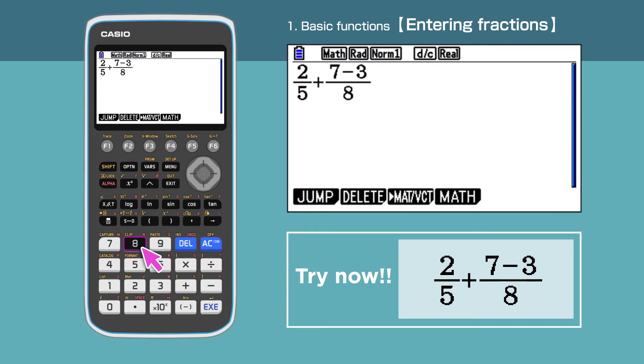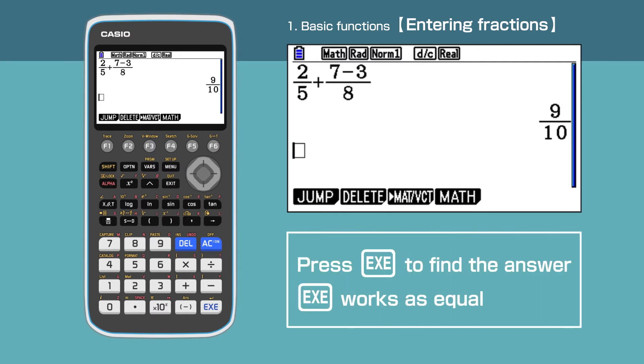Press the execute button to calculate. For this calculator, we use execute to find the answer to our calculation - there's no equal sign button. The answer for the second example is 9 over 10, presented as a fraction.